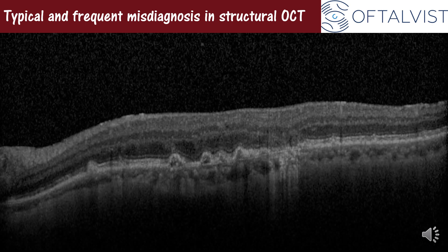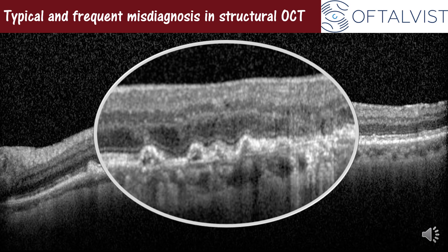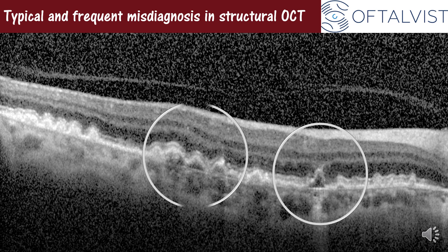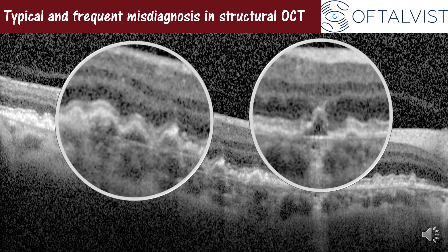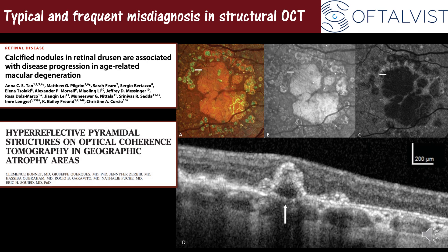Given that introduction, I would like to share some typical and frequent misdiagnoses in structural OCT that we currently still receive in our daily practice. For example, these kinds of structures are not exudative signs and do not constitute serous PEDs. These represent soft drusen, special soft drusen, and also non-drusen — described as calcified nodules or hyperreflective drusen — correlating with the original description by the group of Euseca quercus.